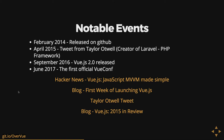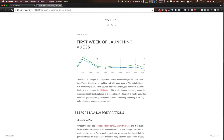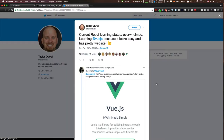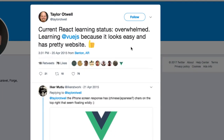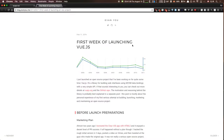Some notable events in the history of Vue.js: it was first released on GitHub in February 2014. Evan You posted on Hacker News and r/javascript and it kind of blew up overnight — people loved the syntax and it started to pick up traction, making the front page of Hacker News and Reddit the first day it was released. In April 2015, there was a tweet from Taylor Otwell, creator of Laravel, saying: 'Current React learning status: overwhelmed. Learning Vue.js because it looks easy and has a pretty website.' That one tweet caused all the Laravel community to hop on the Vue.js bandwagon.